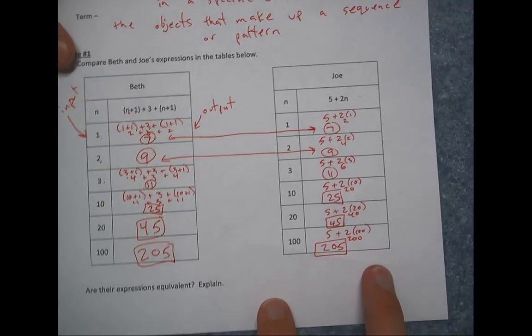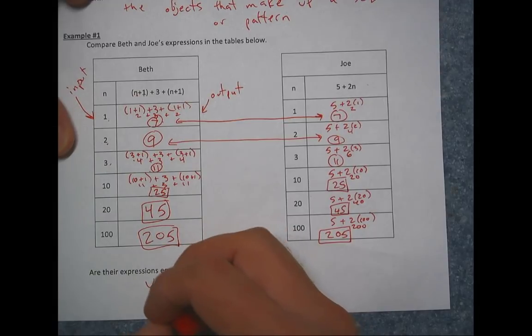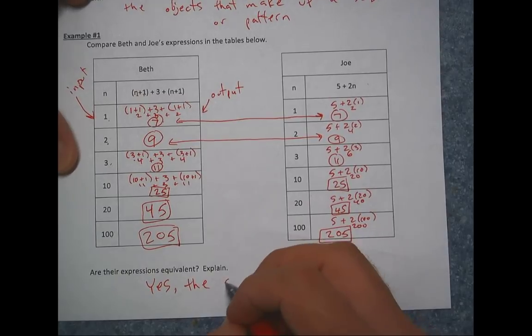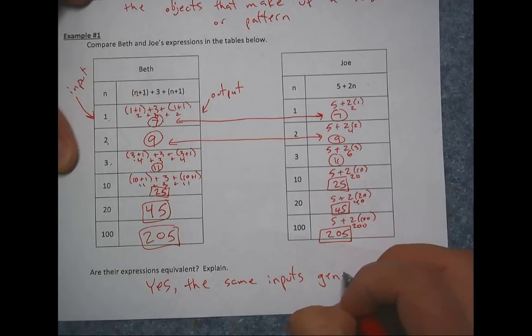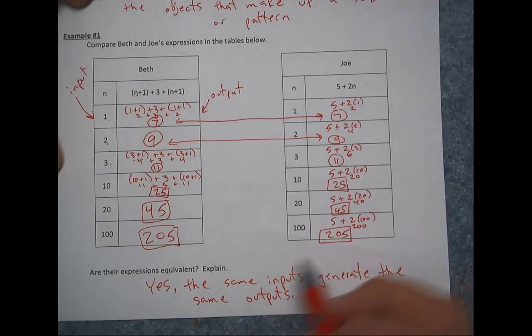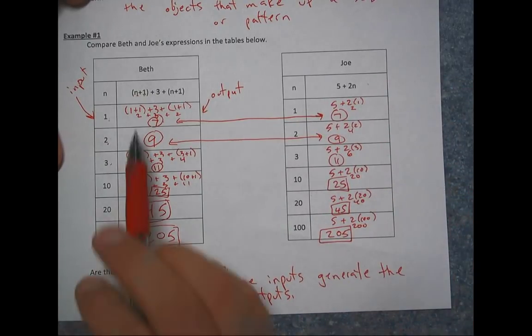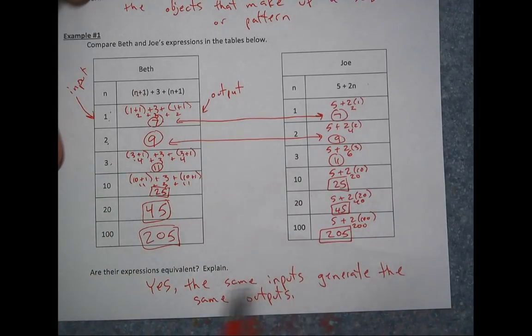Again, you can pause the video if I'm going too fast. Now, are these expressions equivalent? You would absolutely say yes. And then you can say something about the inputs and outputs. The same inputs generate the same outputs. So if I did a certain set of inputs here and then did totally different inputs over here, I haven't proven anything. So I have to use the same inputs here and here for both expressions. And if they give the same exact outputs, I've proven that these are equivalent.